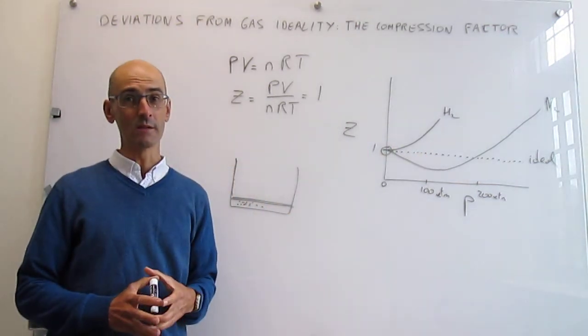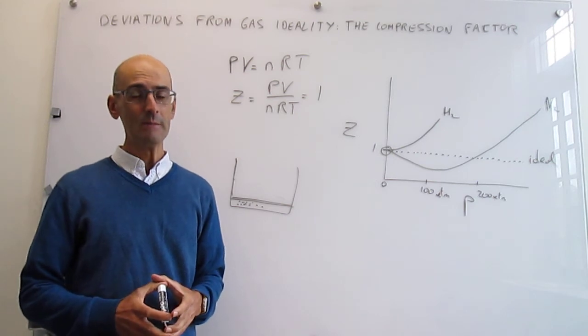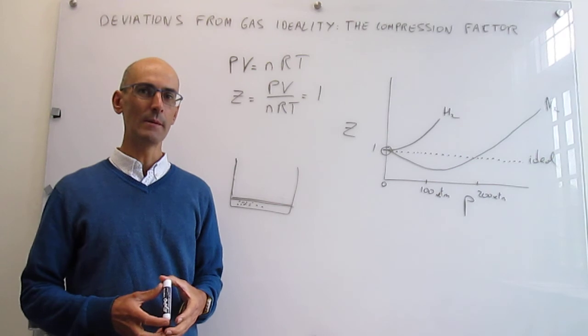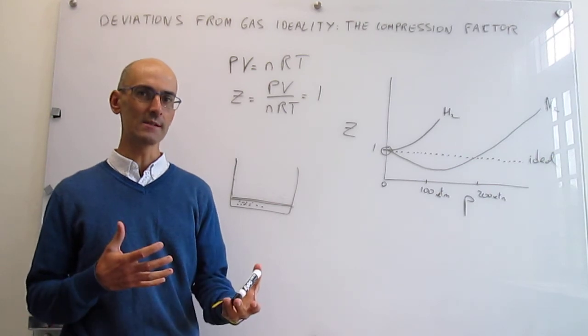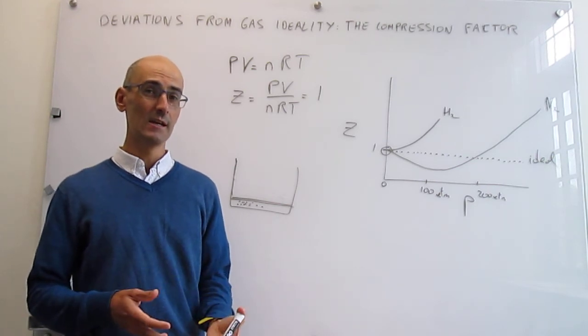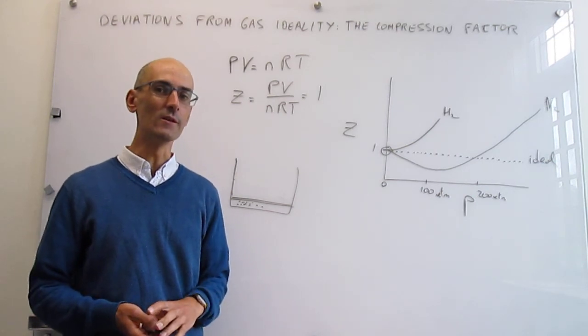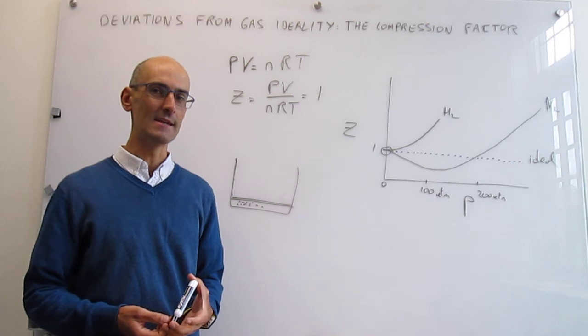The Van der Waals equation of state is quite important because it was the first time that people thought about interactions between gas particles. That type of work got Van der Waals the Nobel Prize in Physics in 1920.